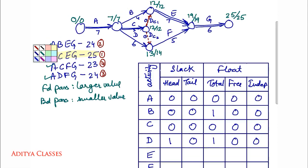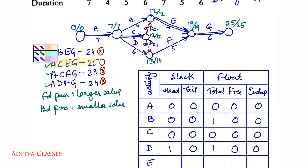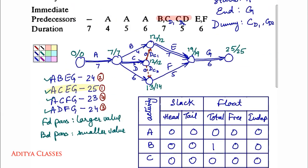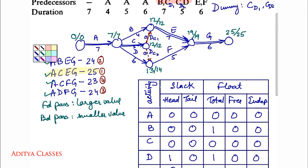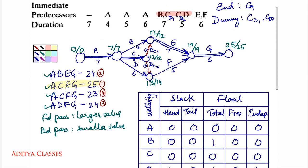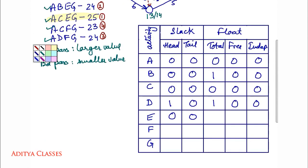For activity E: head slack is 19 minus 19 equals 0; tail slack is 12 minus 12 equals 0. Total float: 19 minus 12 minus 7 equals 0. Free float: 0 minus 0 equals 0. Independent float: 0 minus 0 equals 0.